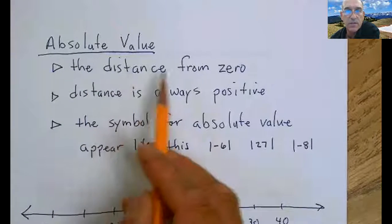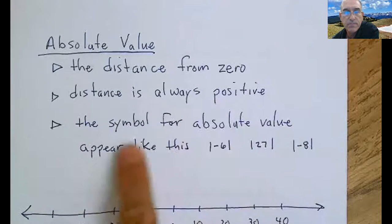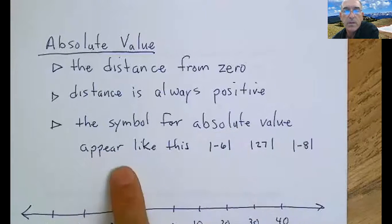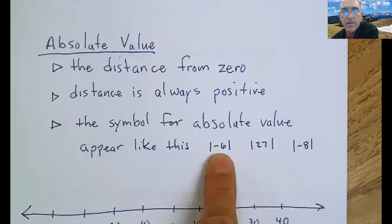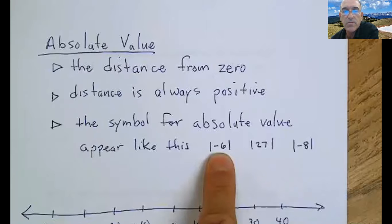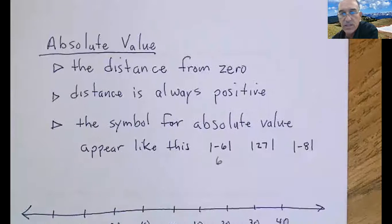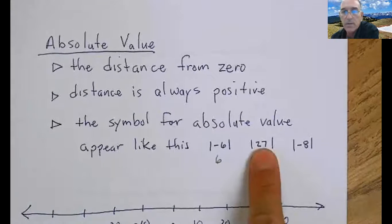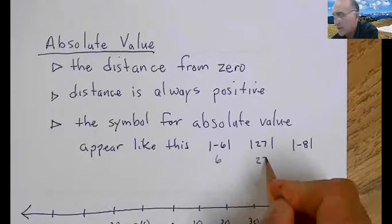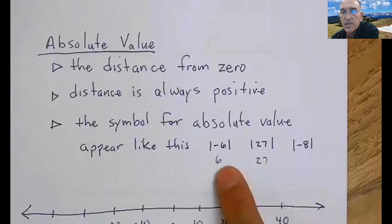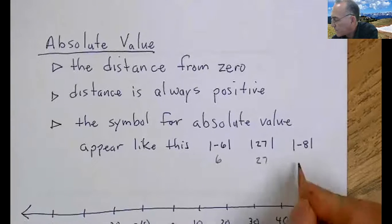Absolute value. Absolute value is the distance from zero. Simple. Remember that distance is always positive. The symbol for absolute value may appear like this. Look at that. So you have a negative six with these two lines on the outside. This absolute value, you know that this is six units from zero. So its absolute value is six. Look at this one. The absolute value of 27. Its absolute value is 27. Notice that distance is always positive. Over here, the absolute value of negative eight is eight.